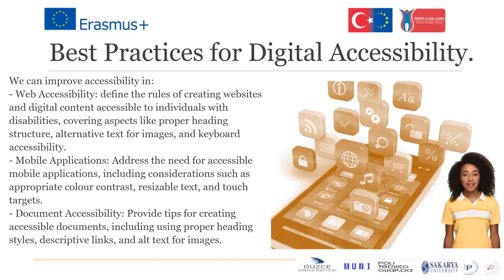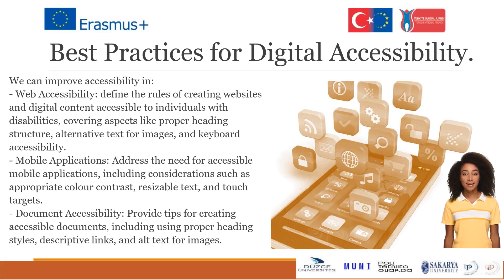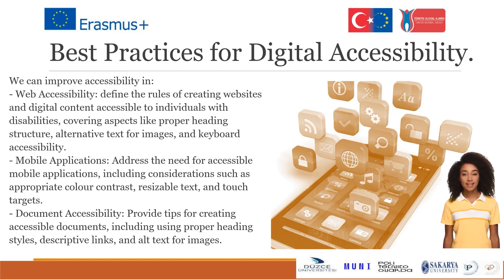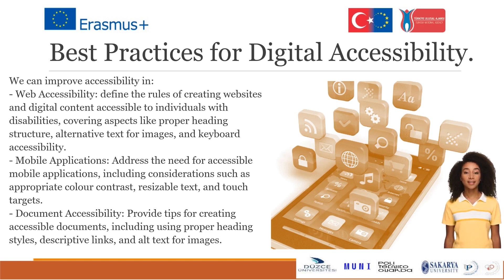We can improve accessibility through web accessibility — defining the rules of creating websites and digital content accessible to individuals with disabilities, covering aspects like proper heading structure, alternative text for images, and keyboard accessibility. Mobile applications address the need for accessible apps, including considerations such as appropriate color contrast, resizable text, and touch targets. Document accessibility provides tips for creating accessible documents, including using proper heading styles, descriptive links, and alt text for images.